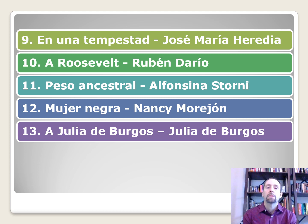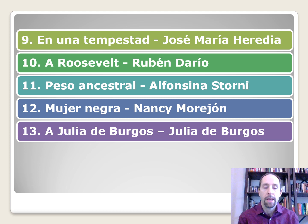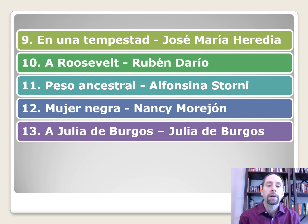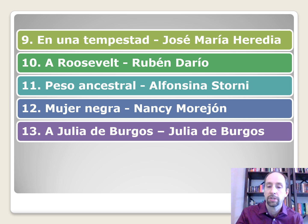Roosevelt by Rubén Darío — Roosevelt starts with R, Rubén starts with R, connection there. Peso ancestral by Alfonsina Storni. Mujer Negra by Nancy Morejón — look at the initials: N-M and M-N are reversed, but the letters N-A and M-A make a connection. Julia de Burgos by Julia de Burgos — no need for a mnemonic on this one, it's a freebie to figure out who wrote it.